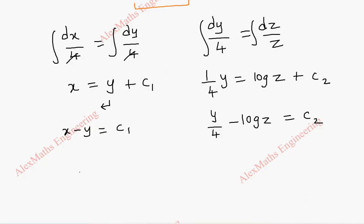Now y by 4 minus log z equal to c2. Taking u as x minus y and v as y by 4 minus log z.